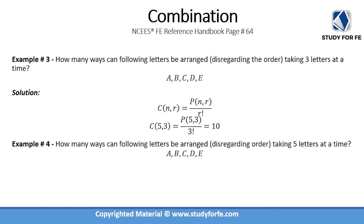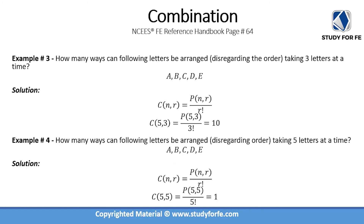If we were taking all five letters at a time, what would be the number of combinations? As we've seen before, if you are taking all items at a time then there is only one combination.